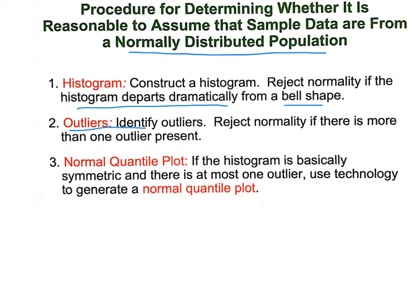We're gonna look for outliers. If there is more than one, not normal. We can have one outlier, that's okay. If we have more than one outlier, we're gonna say no, reject normality there.